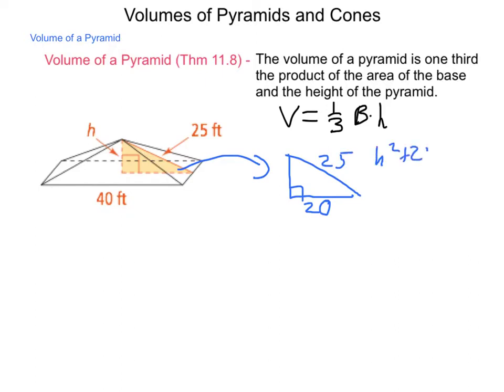h squared plus 20 squared equals 25 squared. We will solve this down and get h is equal to 15. So now, we calculate the volume.